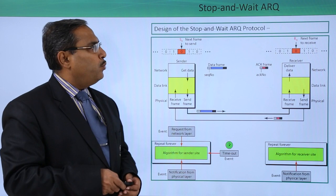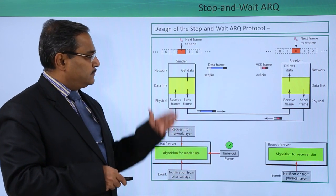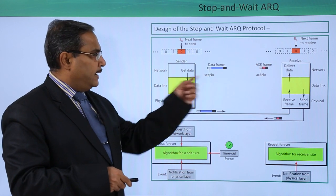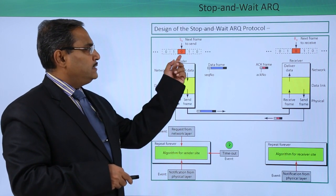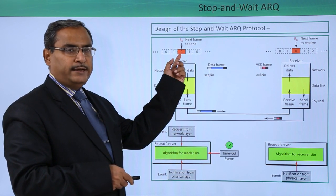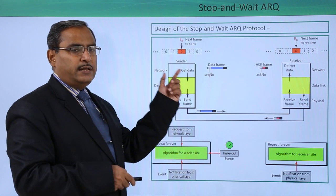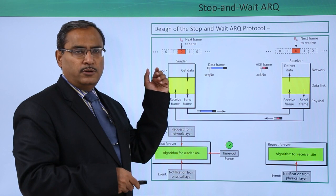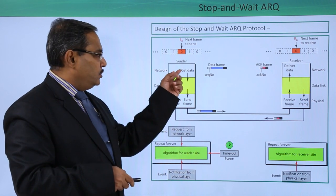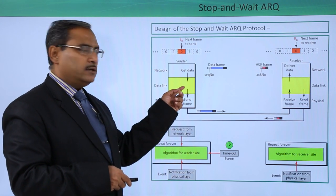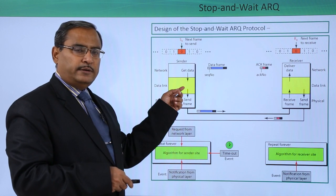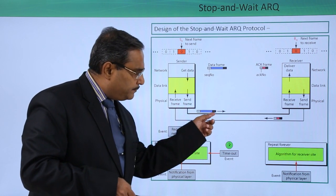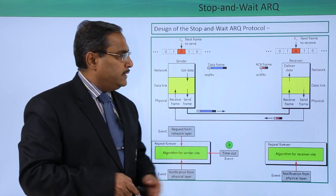The design of the Stop and Wait ARQ protocol is shown in this diagram. Here we have the sender and the receiver. As we are using frame numbers in modulo-2 arithmetic, we cannot find any value other than 0 and 1. From the network layer, the data link layer gets data and then sends the frame. The frame will be sent and received by the receiver.